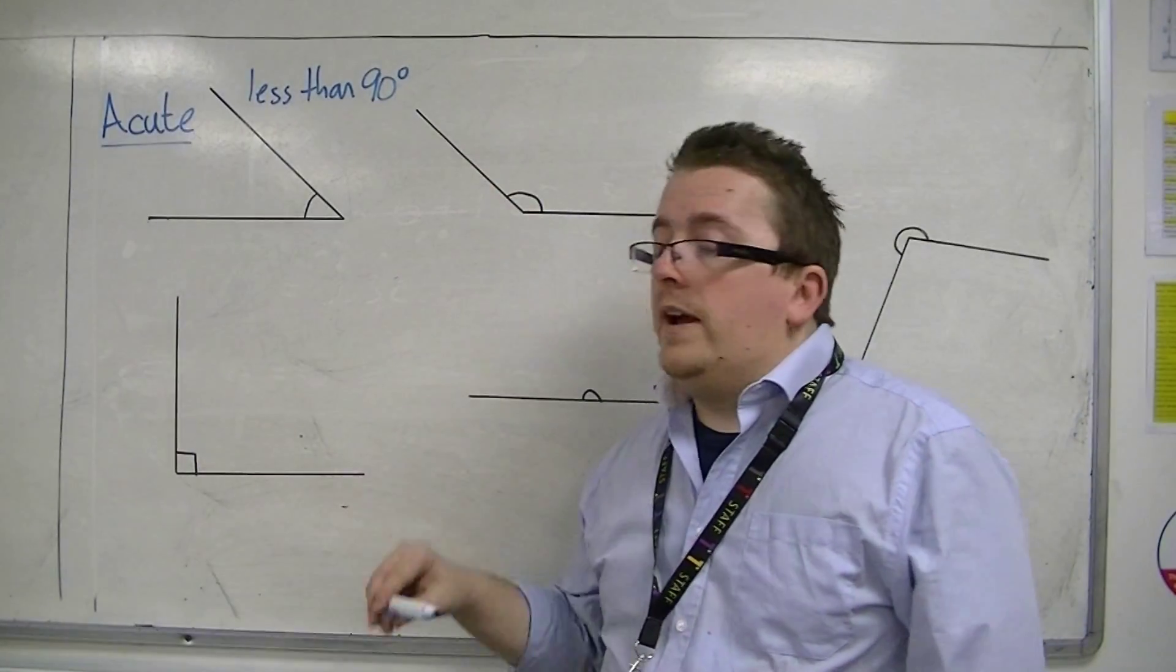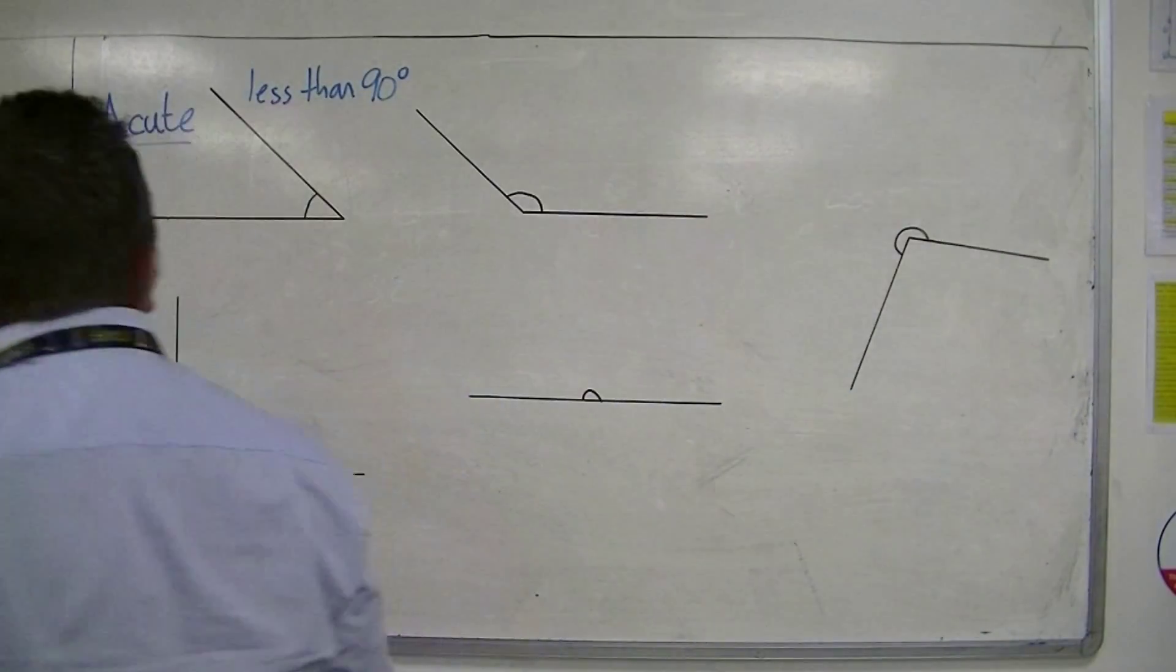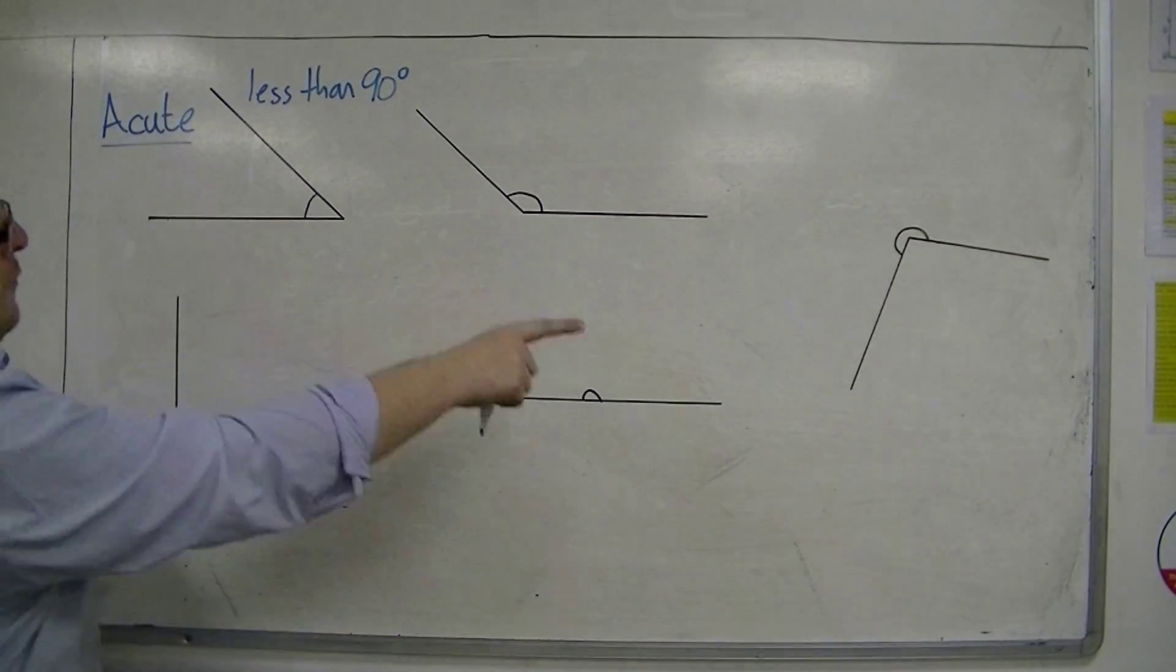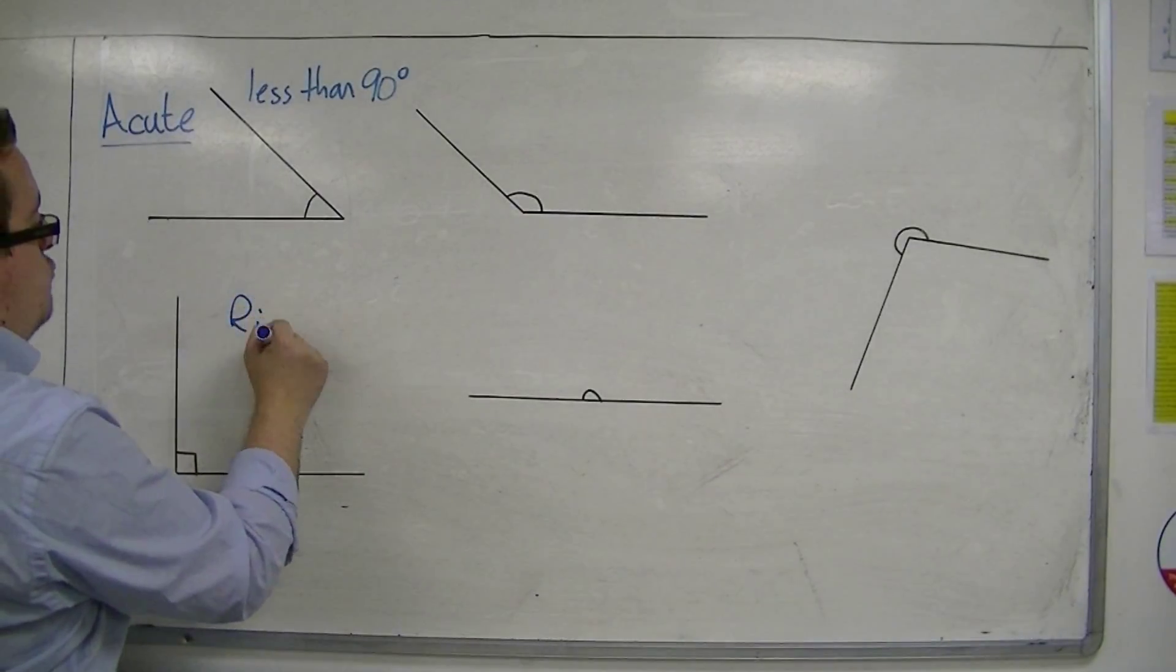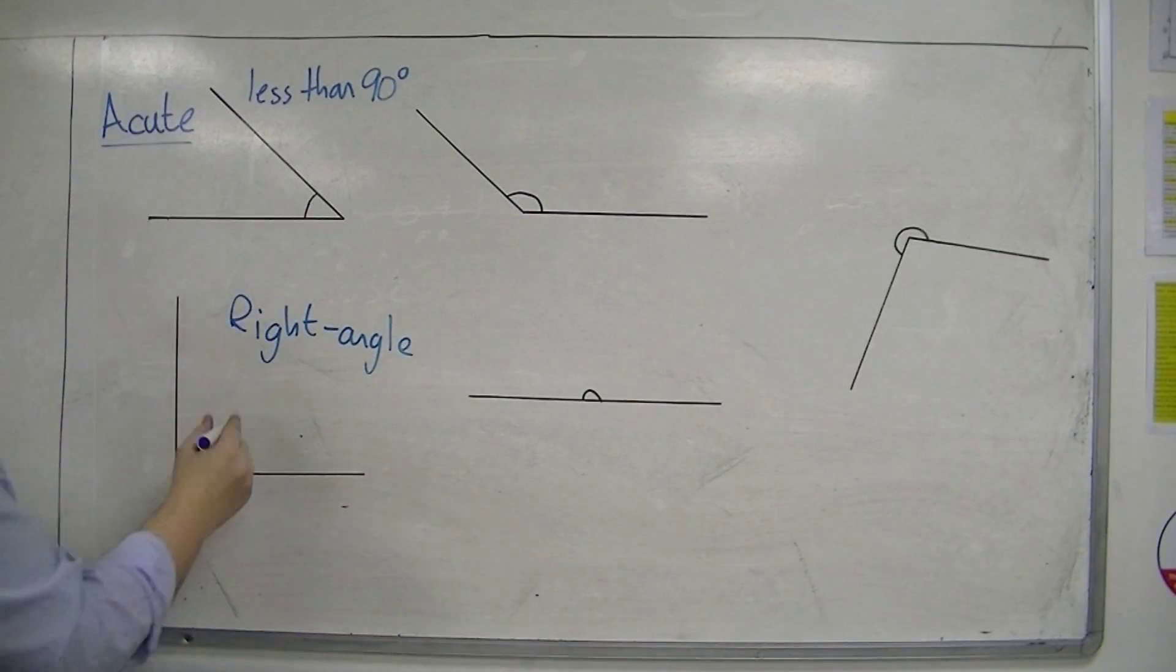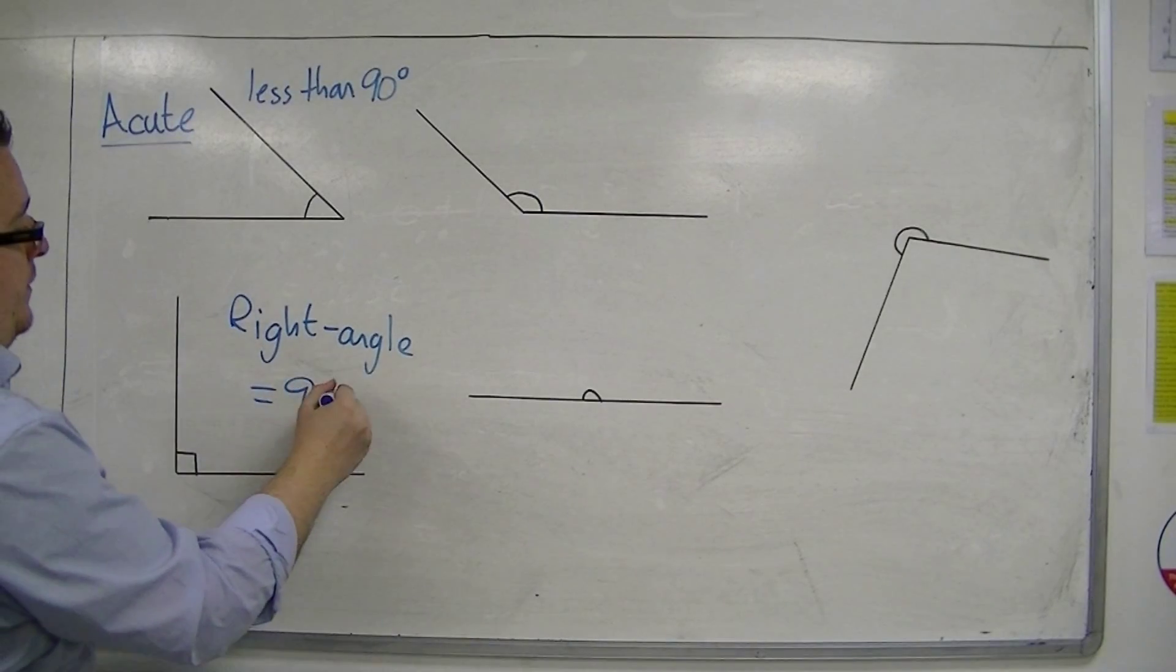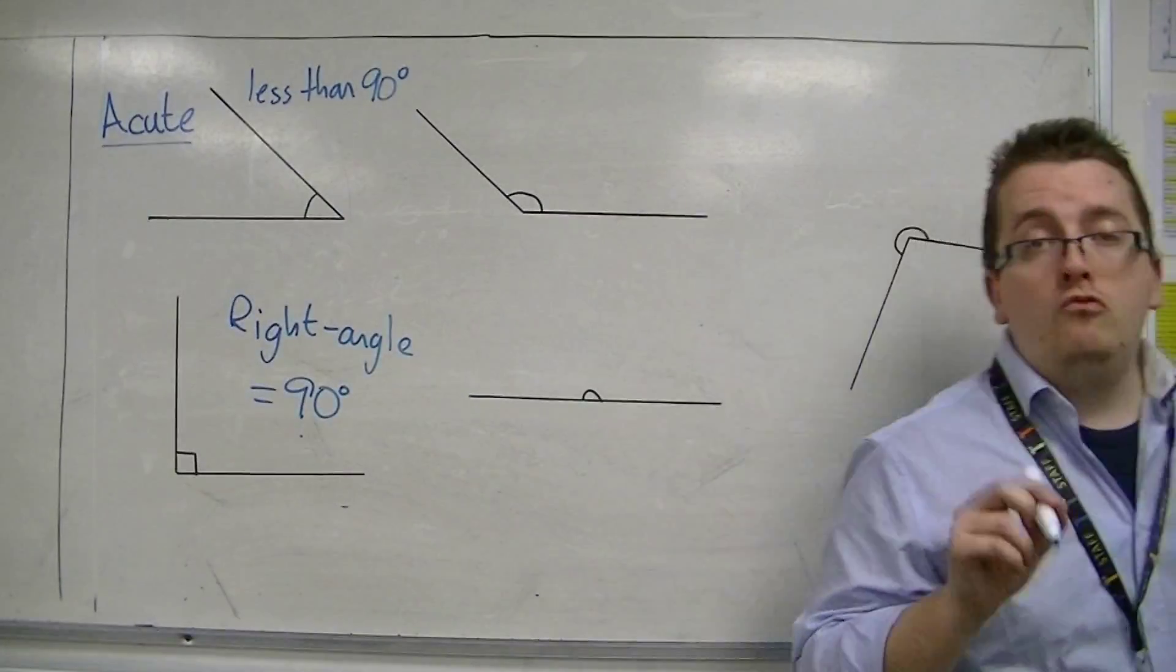Then you get up to the next grade of angle, this one. This is a very special one. This is the only one of the five that are represented using a little square in the corner, and that represents a right angle. A right angle is equal to 90 degrees. An angle that is 90 degrees is known as a right angle.